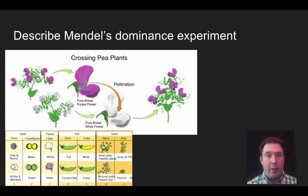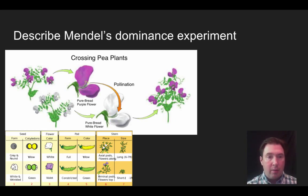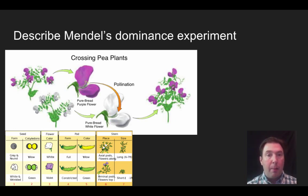Mendel didn't just stop with flowers. He crossed lots of different characteristics and saw this consistently. When he crossed gray and round pea seeds with white and wrinkled ones, he would only get one variety. Yellow and green — only one variety. Full with constricted — only one variety. Yellow with green pods — only one variety. Location of the flowers or the height of the plant — again, only one variety ends up holding out.